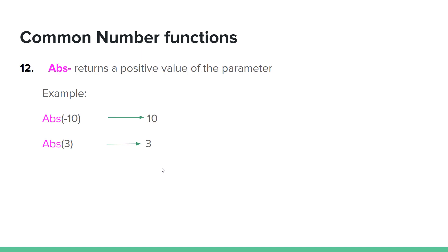ABS returns the absolute value — the positive value of the parameter. For example, the absolute value of negative ten is positive ten. The absolute value of a positive number is also the positive value.